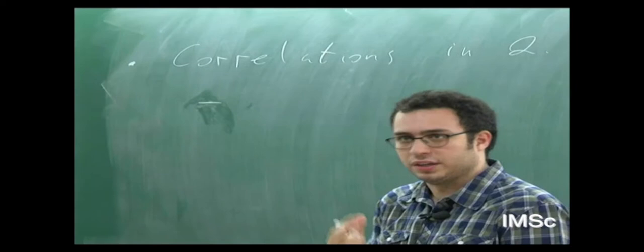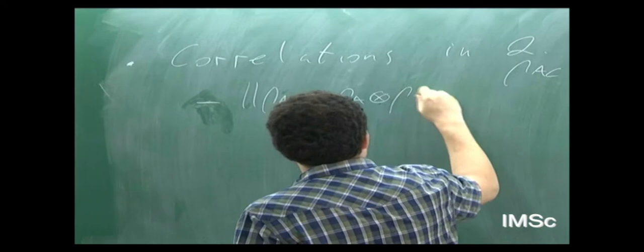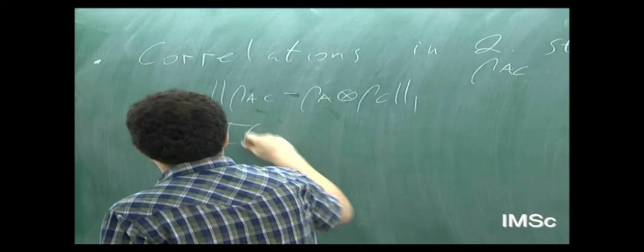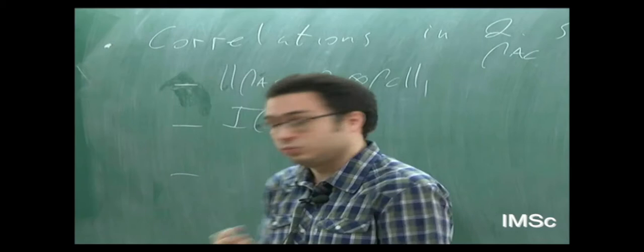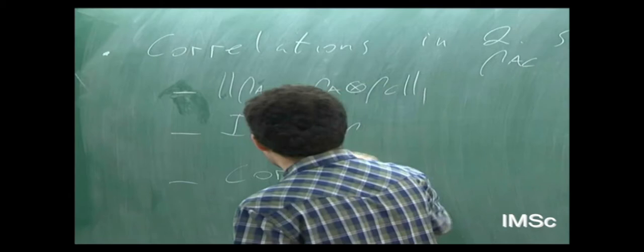We discussed correlations in bipartite quantum states — we already did that on the first day, but then we introduced one more way of analyzing correlations. Let me remind you the three ways. One is trace norm: we have a bipartite state rho_AC, and this quantifies how far the state is from a product state, which has no correlations. Of course, we could also use the mutual information. And then there is this new way — quantifying correlations in terms of the covariance — which we worked with a lot in these two lectures.